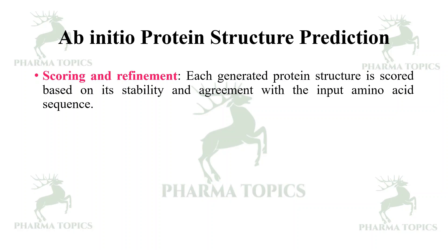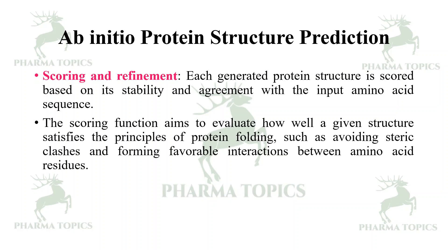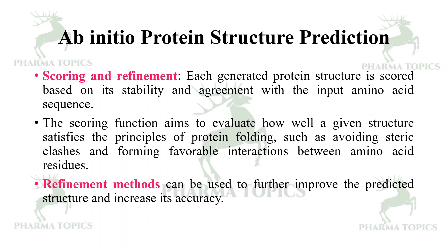Each generated protein structure is scored based on its stability and agreement with the input amino acid sequence. The scoring function evaluates how well a given structure satisfies the principles of protein folding, such as avoiding steric clashes and forming favorable interactions between amino acid residues. Refinement methods are then applied to further improve the predicted structure and increase its accuracy.